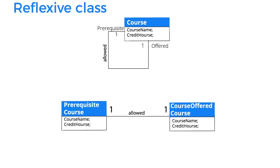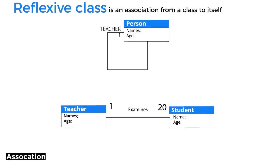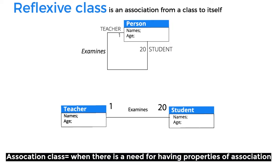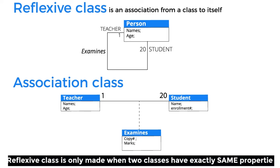Another example of a reflexive class: one teacher examines 20 students. Here, teacher and student contain exactly the same properties — name and age. This can also be shown as a reflexive class. Again, both diagrams mean the same thing, just shown in a different way. One is the reflexive representation, and the other is the association class representation.